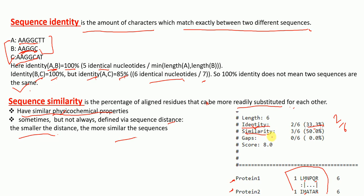When we look at the percentage similarity, we include the identical characters and also those shown by two dots. One dot means the sequences are neither identical nor similar. Two dots mean these bases are similar — for example, leucine and isoleucine have similar physicochemical properties. So the similarity is three out of six, which is 50%.